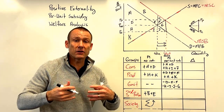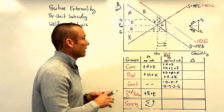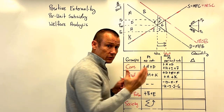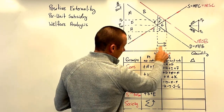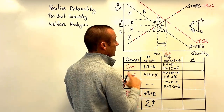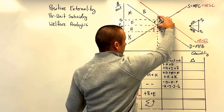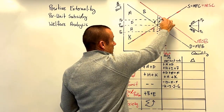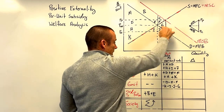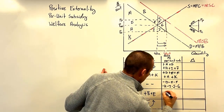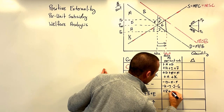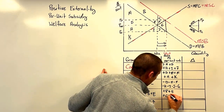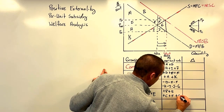Third parties are going to gain even more than before. Previously they had B and E, but now we're producing additional units because of the per unit subsidy. With those additional units produced, we include B and E but also grab C, F, and G. So third parties get plus B plus E plus C plus F plus G.